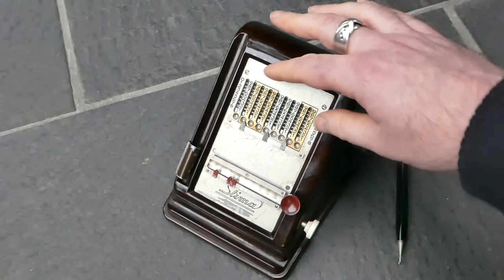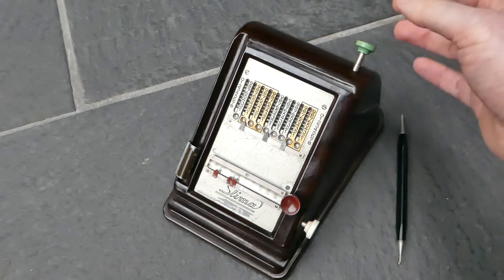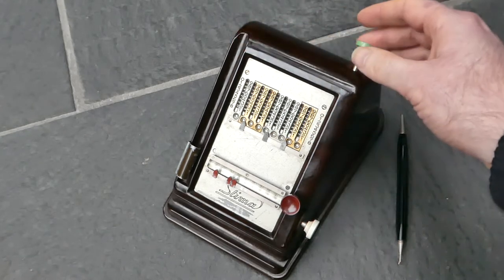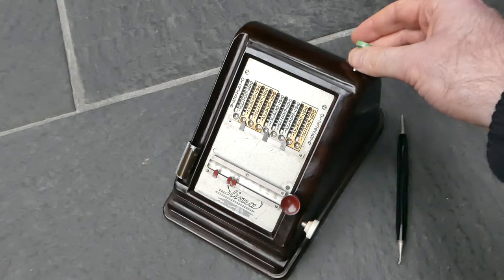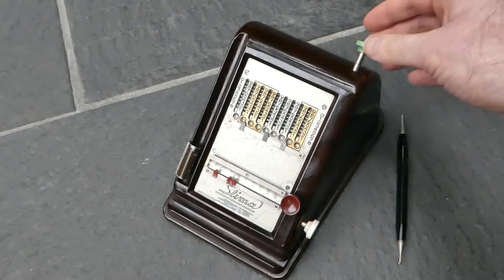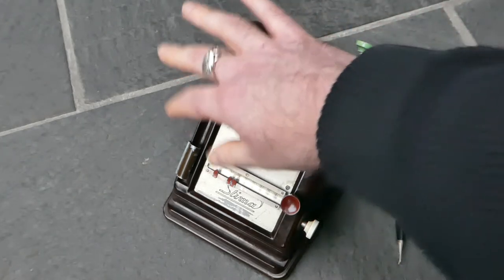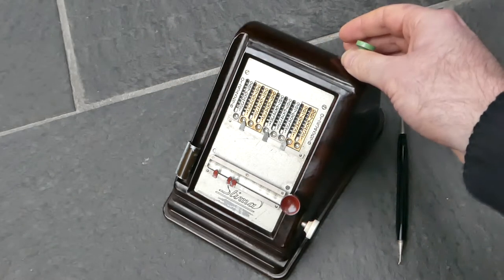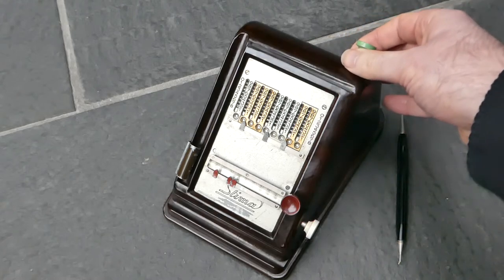It came in seven, eight or nine columns and those were designated 1, 2 and 3 in Roman numerals. There were also versions with a button on the side for subtraction. Those had an S in the model name.